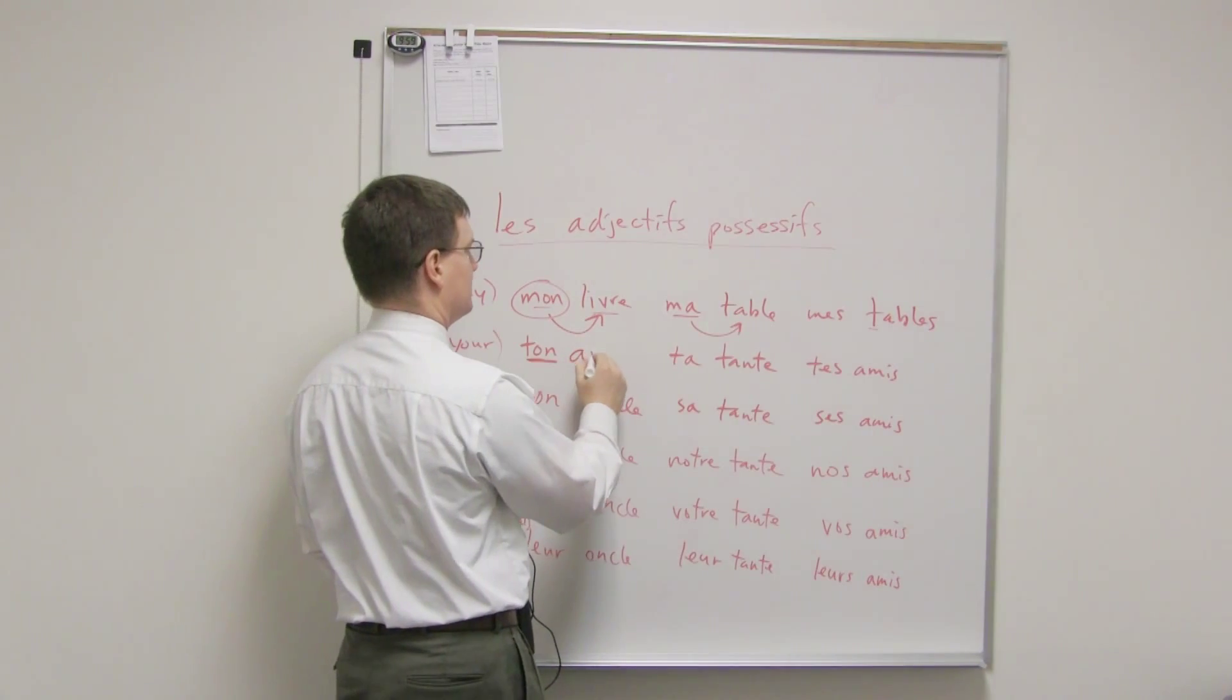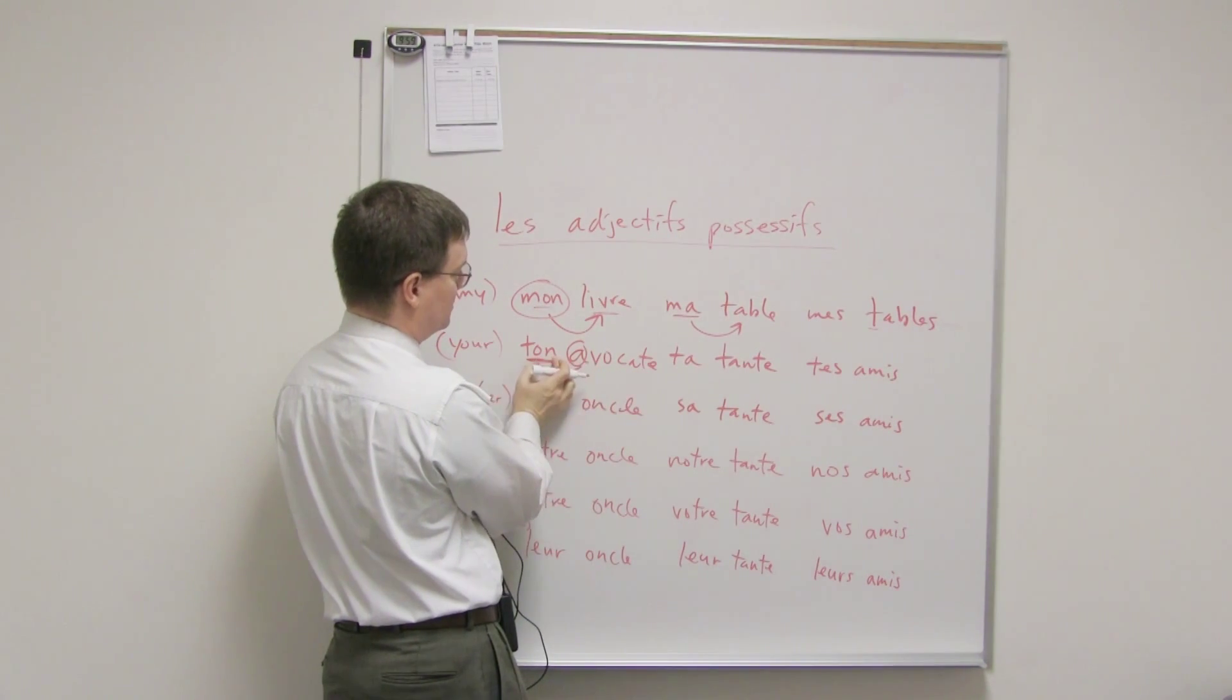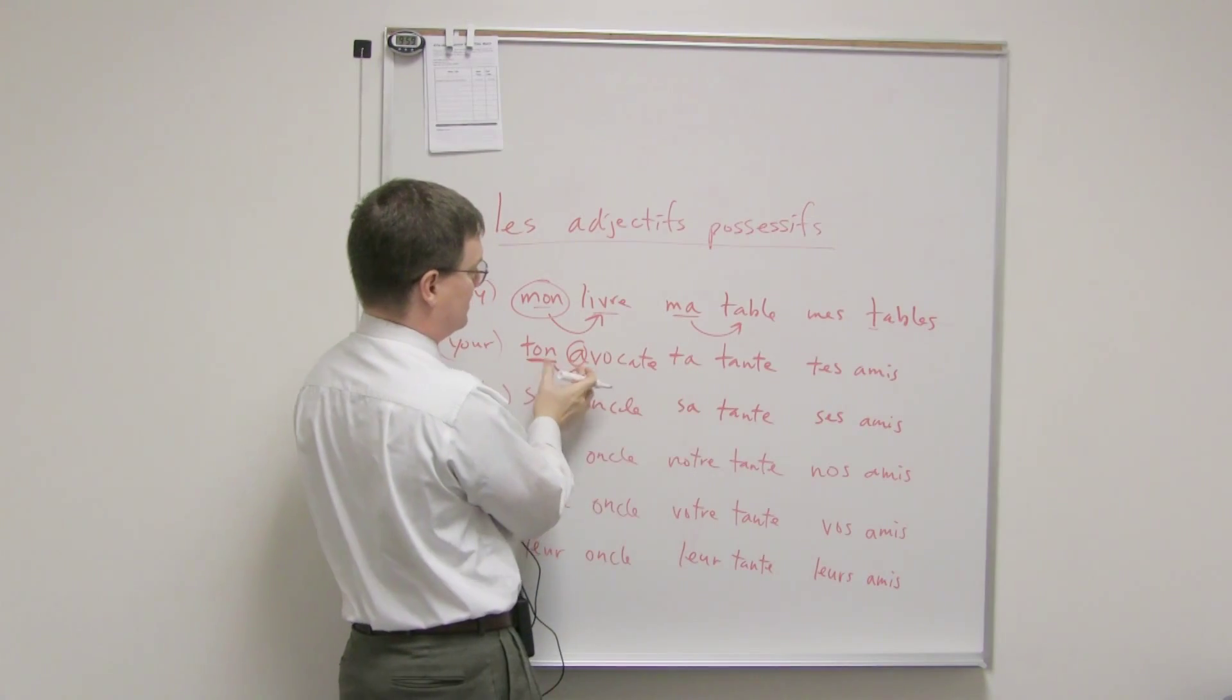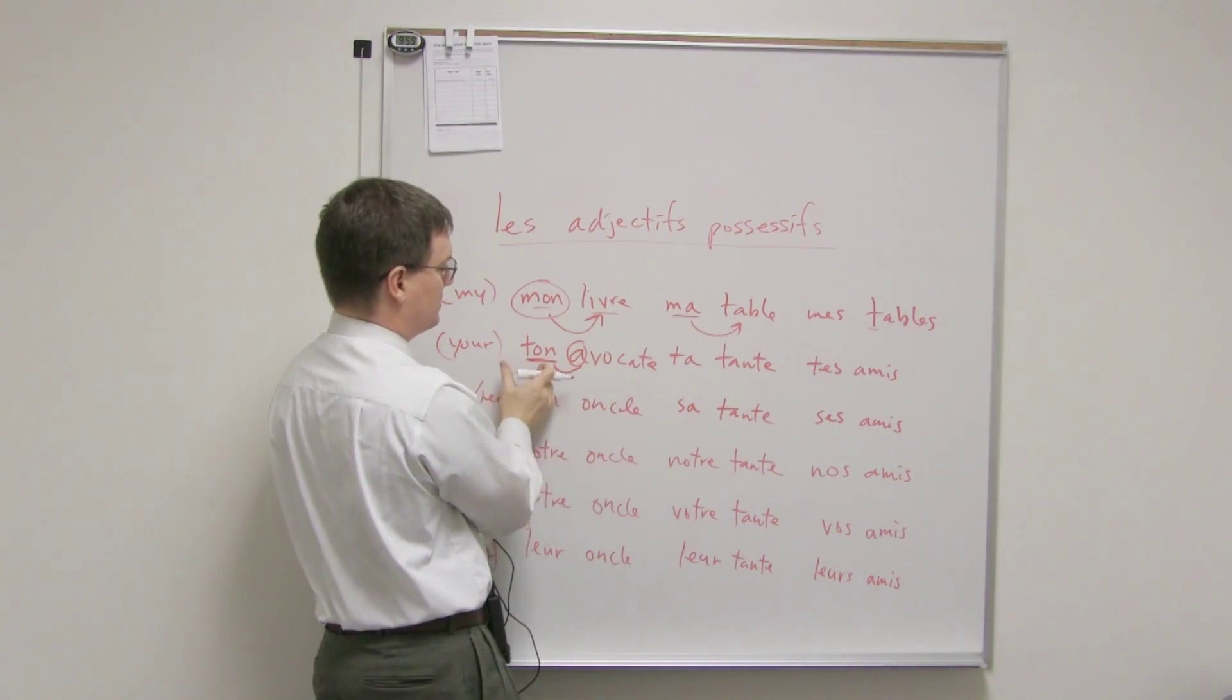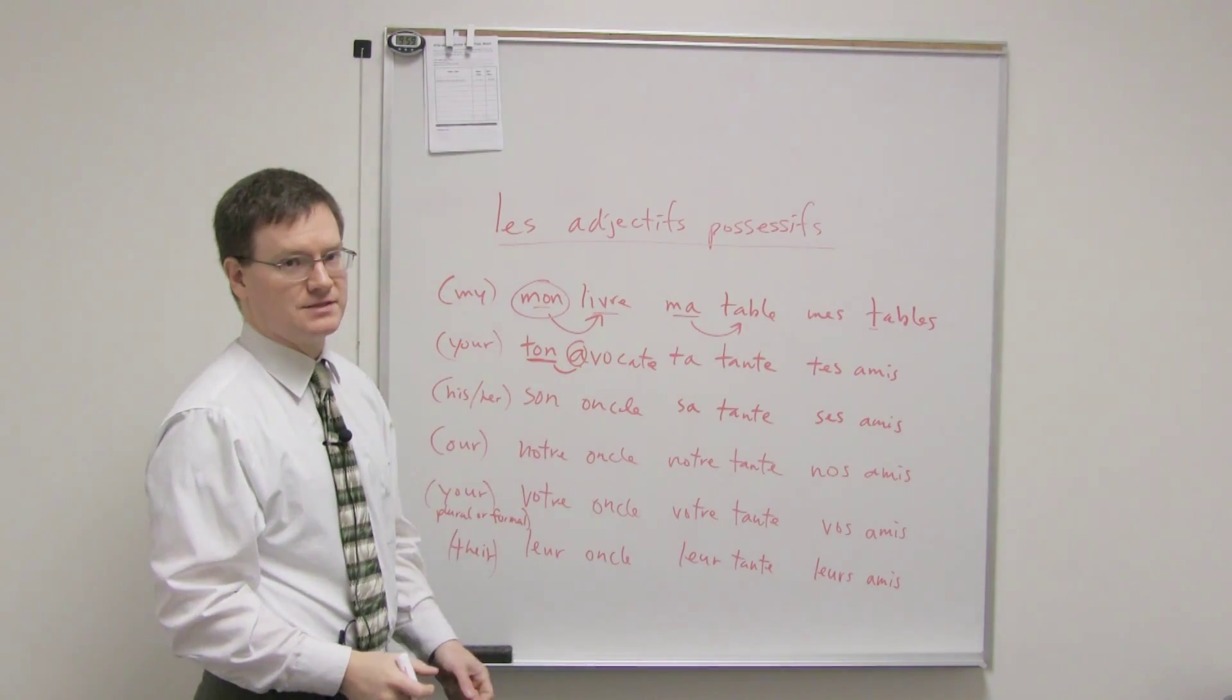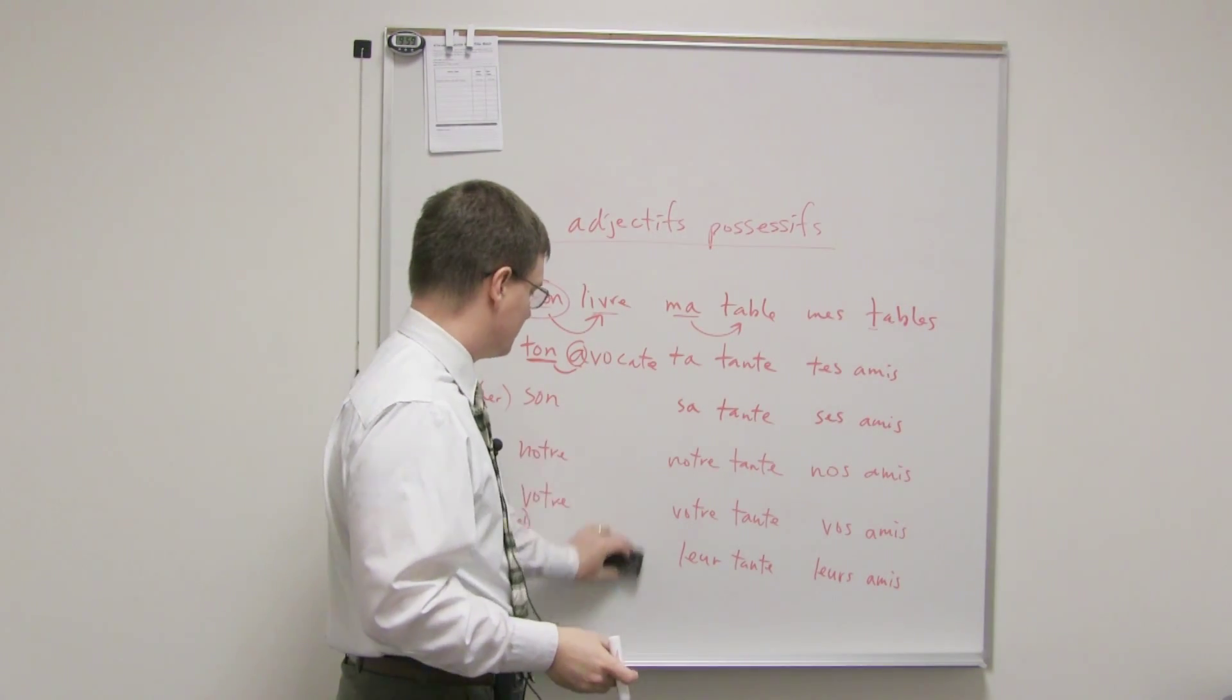Ton avocat. This is a great example. Notice this, right here, this means your female lawyer. Notice it starts with a vowel, and so you need to make that liaison here. So, you have to use the masculine form, the ton, here. Notice you couldn't say ta avocat, because there would be two vowels here. So, this is what you have to use. You have to use the masculine singular form, if it's feminine singular and starts with a vowel. That's the only tricky part, really, with possessive adjectives. So, that's something important to consider.